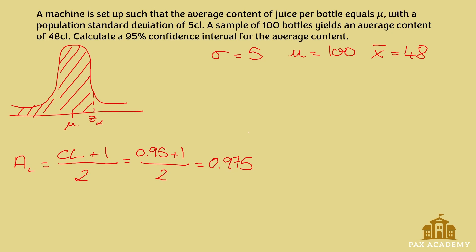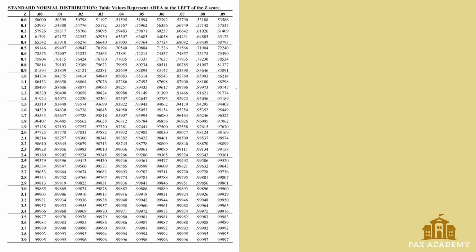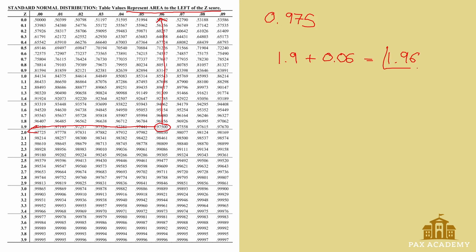Now that we know the area to the left, let's find the z-value by looking at the positive z-score table. As you can see in the title, it says the table values represent the area to the left of the z-score. The area we found was 0.975, so we find it inside the table. Going horizontally we get 1.9, and then adding the vertical value, 0.06, gives us a z-value of 1.96.